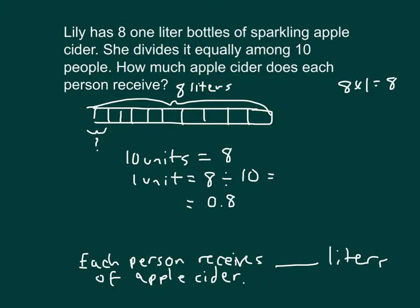Now, we also could have seen eight divided by ten as eight over ten. So each person receives 0.8 liters. Now, if we run our check on that, we have eight tenths times ten, which is 80 tenths, which does equal eight, and that original eight liters. So each person receives 0.8 liters of apple cider.